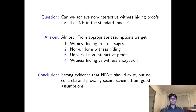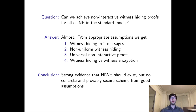We present four different proof systems that make progress towards this goal. Each scheme relies on different assumptions and has some serious qualifications, but each represents progress towards non-interactive witness-hiding. As a whole, we hope they clarify the landscape of witness-hiding proofs.